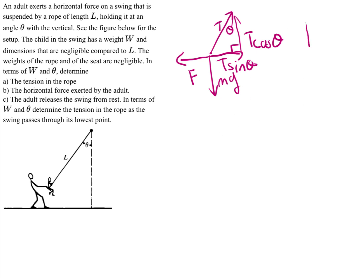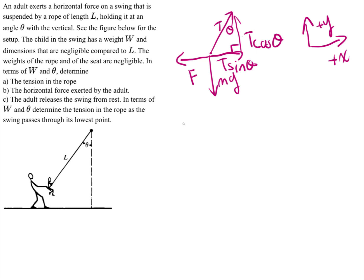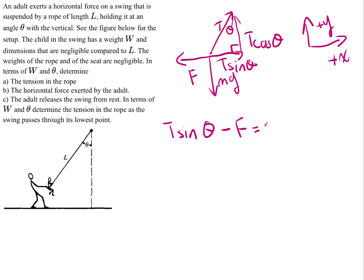The upward direction is the positive y direction, and the direction pointing towards the right is going to be the positive x direction. Using Newton's second law — the net force is equal to the mass times the acceleration — in the horizontal direction, you have the tension times the sine of theta minus the force from the adult's pull, and that is equal to the mass times acceleration of the child, which is 0, since the child is at rest. So this is simply equal to 0.